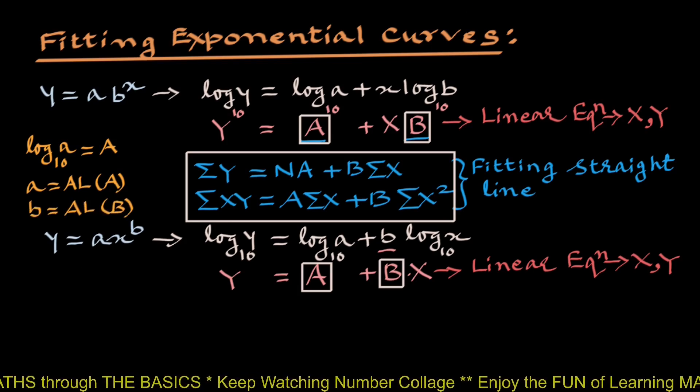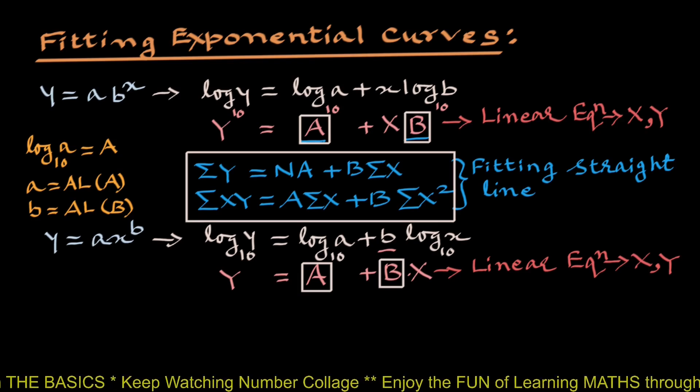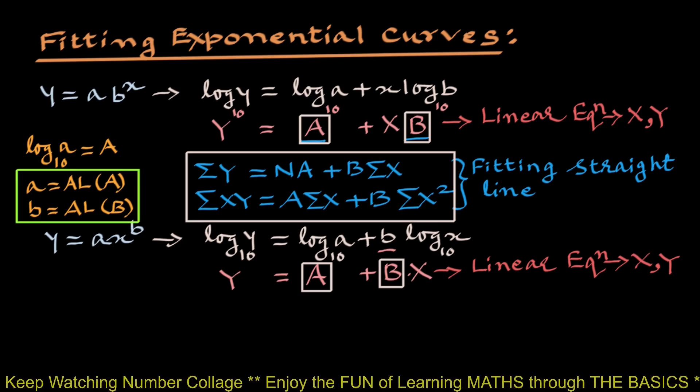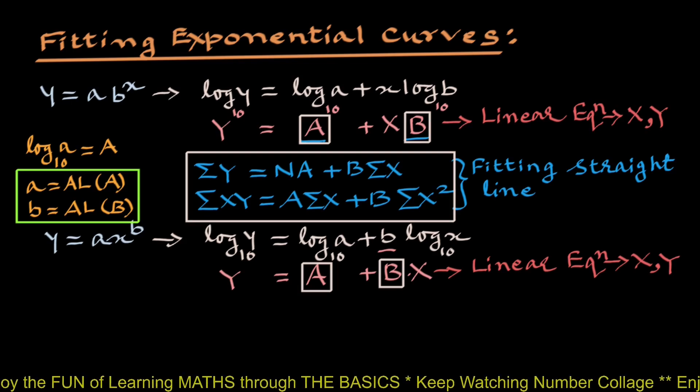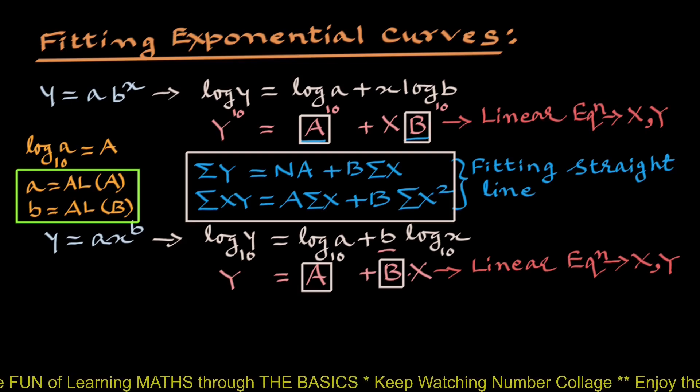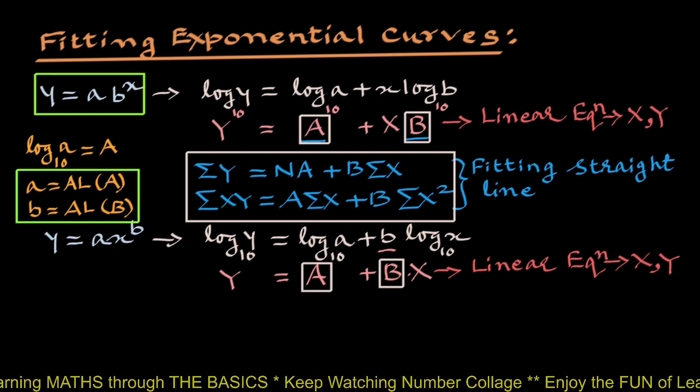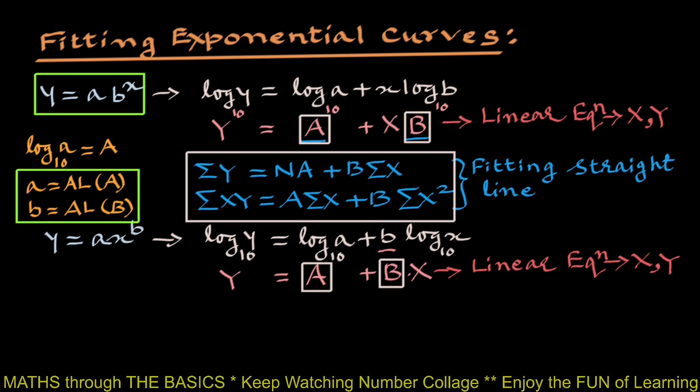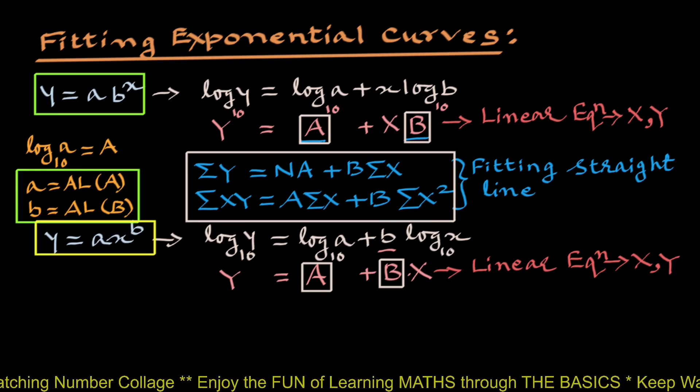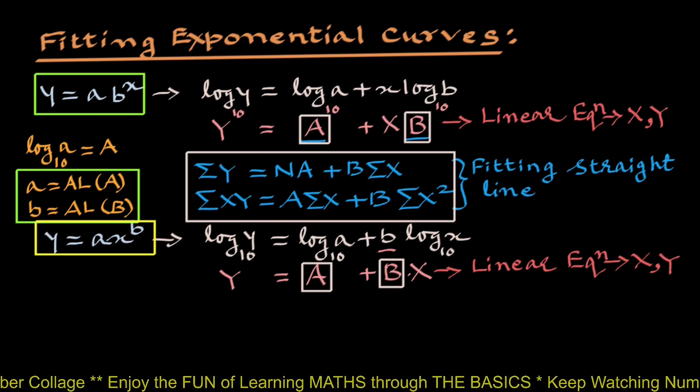Now, after getting values of small a and small b, we can write equations of the best fit in the exponential form y equals a b raised to x and y equals a x raised to b. Let us see how this is done.